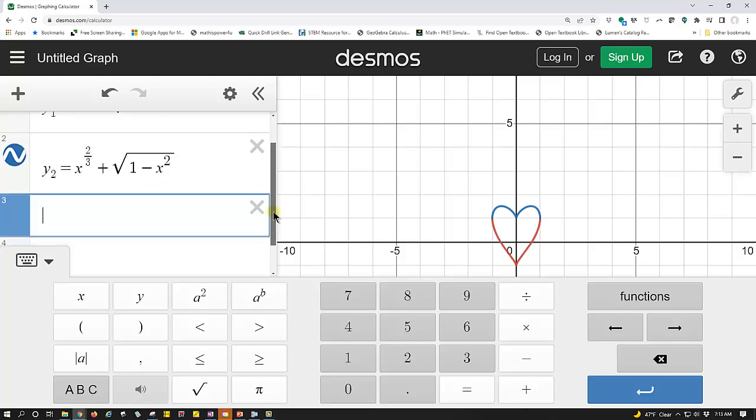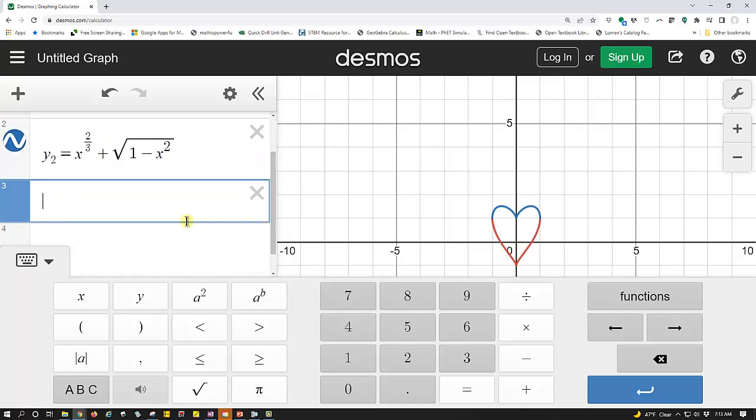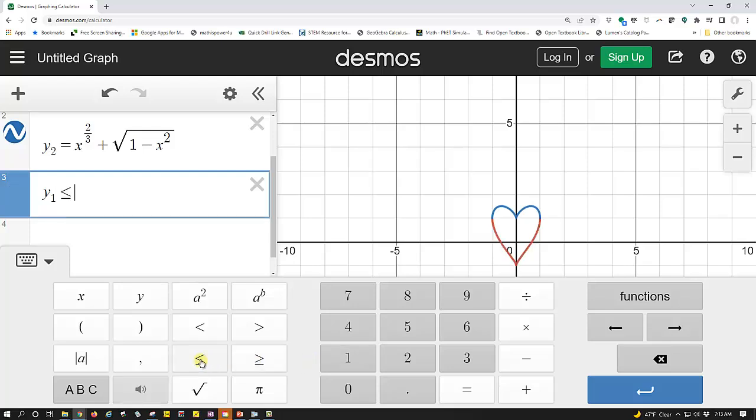Notice right now, the top of the heart is blue, the bottom of the heart is red, but that's okay. Now we go down to cell three and enter y1 less than or equal to y less than or equal to y2.